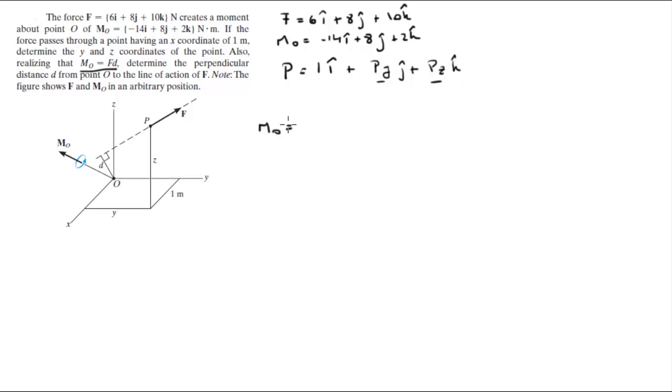You know that the moment that it creates about O is given by this vector, which is vector from O to P, cross the Cartesian vector form of F. But O sits at the origin, so this is the same as P cross F.